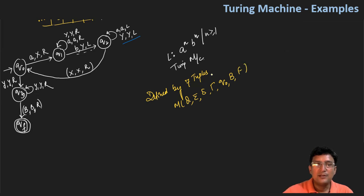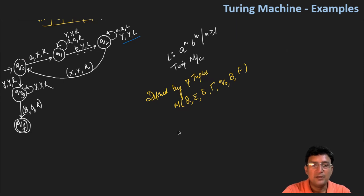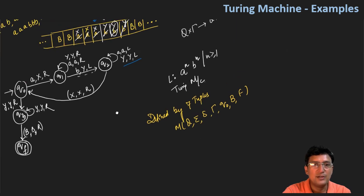So these are the 7 tuples by which the Turing machine is defined. In the last lecture, we have shown a transition diagram for the Turing machine, and in this transition diagram we have states and transitions.